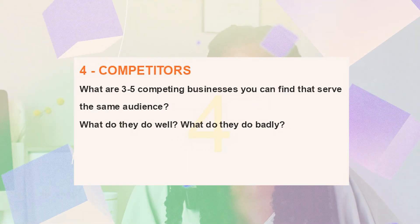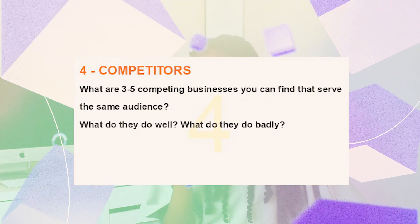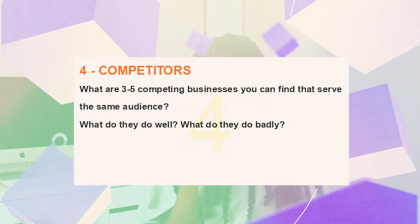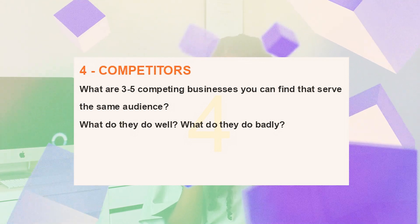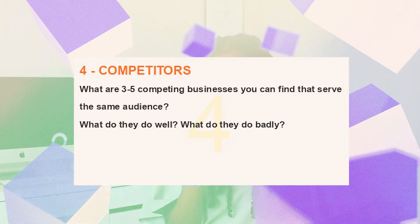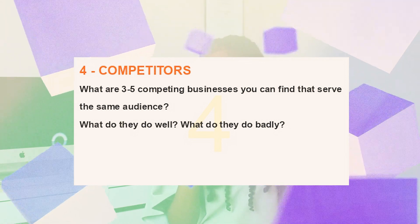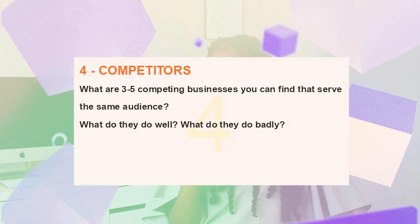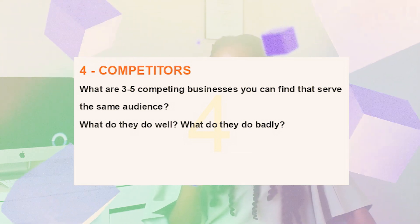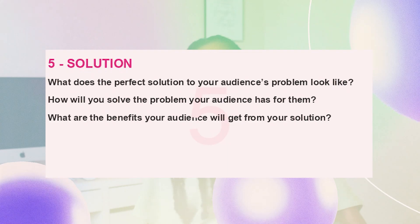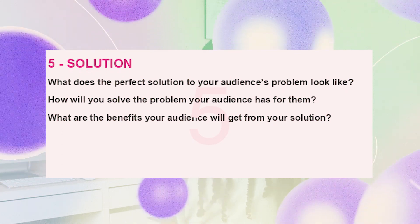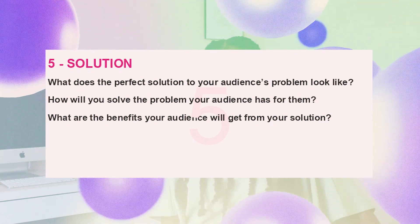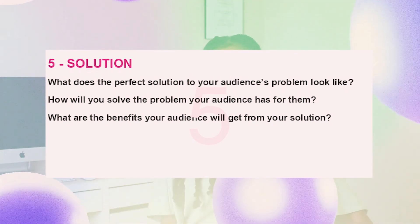Number four is competitors — what are three to five businesses you can find that serve the same audience? What do they do? What do they do well, and what do they do badly? Number five is solution — what would the perfect solution to your customers' problems look like?